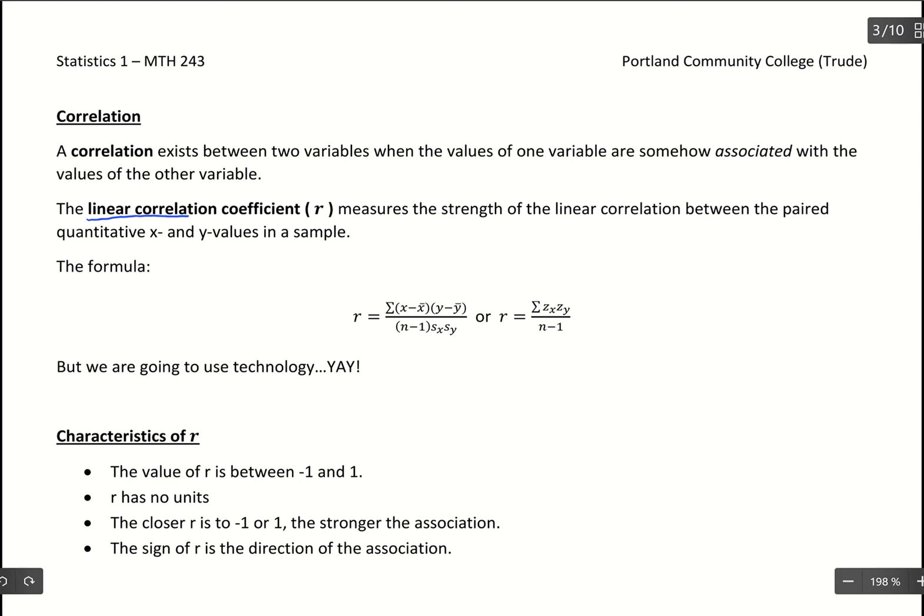It's our linear correlation coefficient, or really we should say sample linear correlation coefficient. Because if we have population data, we use a different symbol for the same idea. We use the symbol rho for population linear correlation coefficient. But typically we're working with sample data, so we're going to see r most often. If you see rho, it's relating to population data.